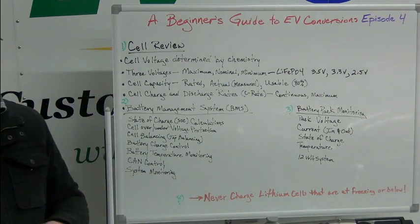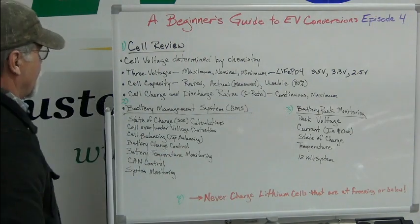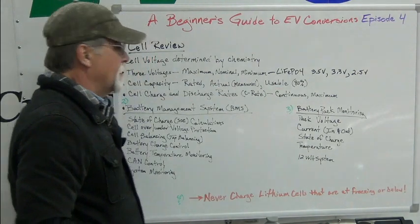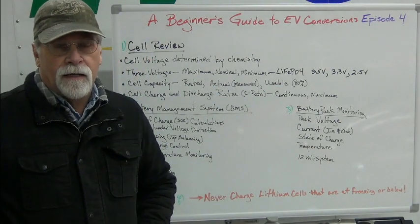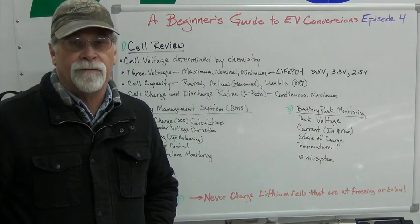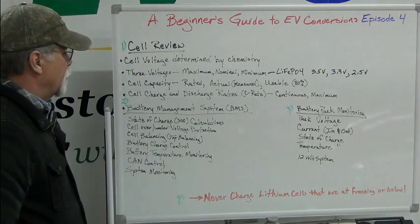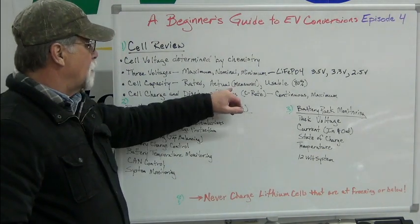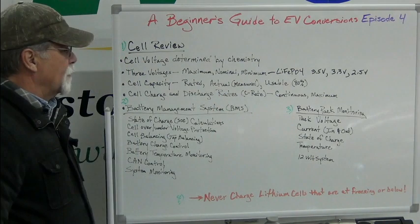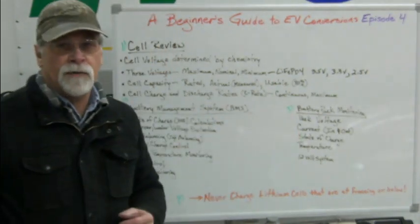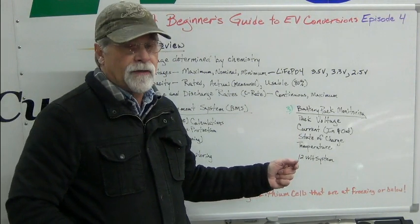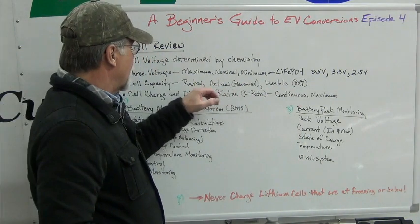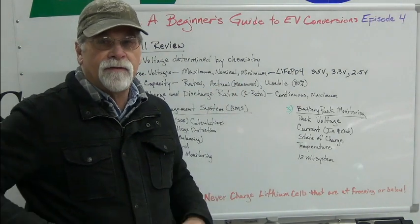Cell capacity. When we're talking about cell capacity, there are three figures: the rated capacity, the actual capacity or measured capacity, and then the usable capacity. The rated capacity is like a cell being sold as a 100 amp hour cell. The cells that we use, CALB, tend to always exceed the rated capacity, so the actual capacity is greater than rated. Only 80% of a lithium iron phosphate cell is usable — that's the usable capacity. In our calculations, we go off the rated, and that always gives us a little extra margin.